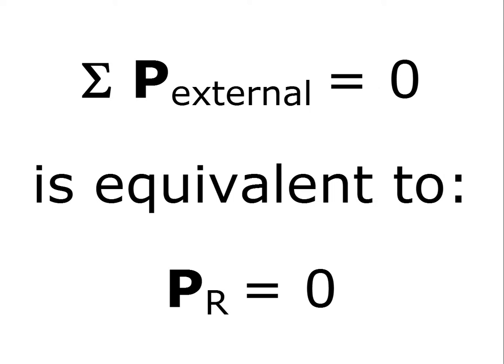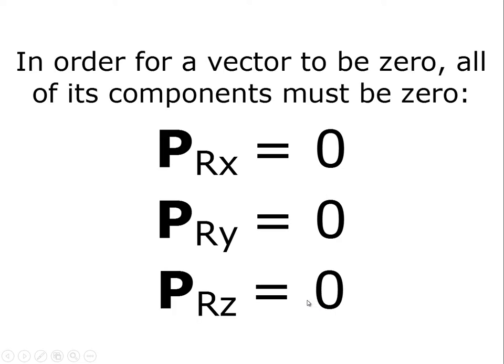When we say the sum of the external forces is equal to zero, what we're really saying is the net force or resultant force is equal to zero. In order for a vector force to be zero, all of its components must be zero. In other words, the x component of the resultant force has to be zero, the y component has to be zero, and the z component has to be zero.